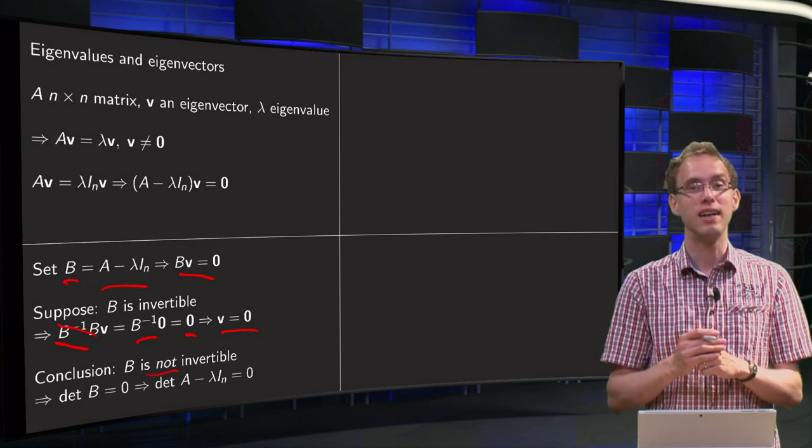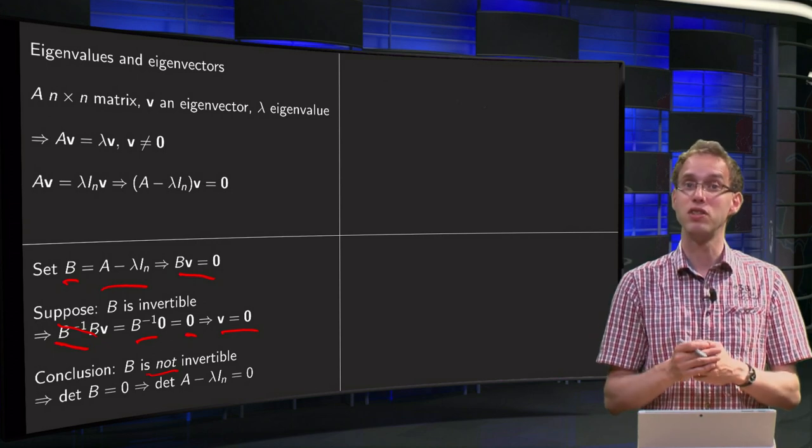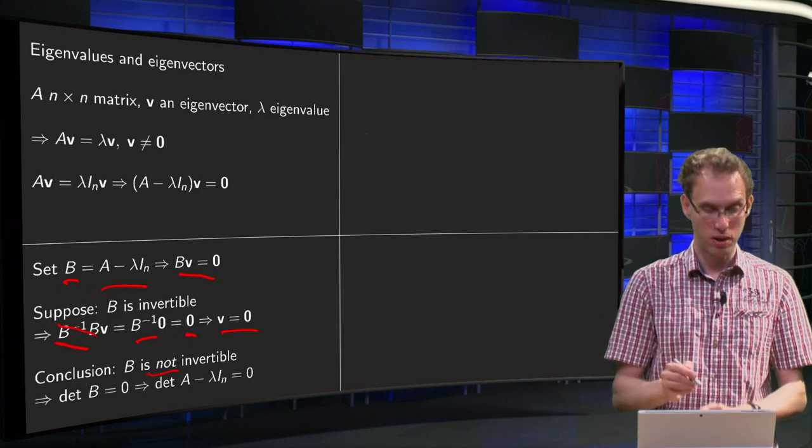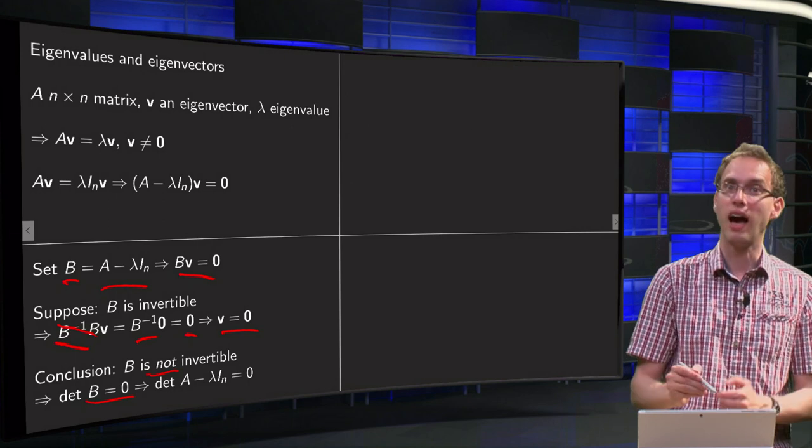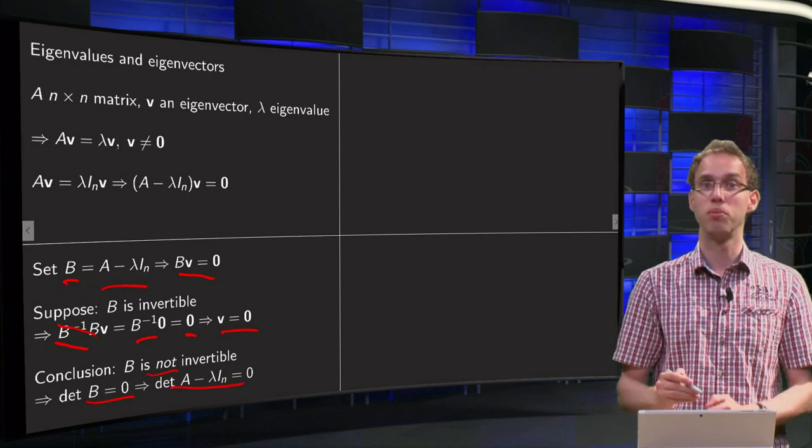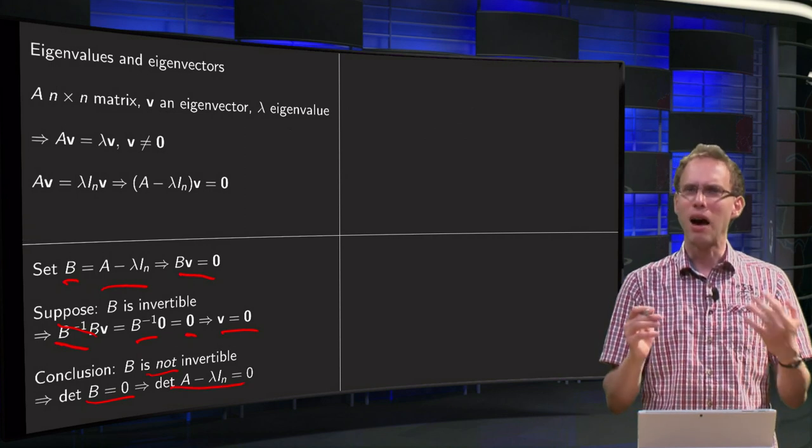But now we have a really nice theorem about that. A matrix is invertible if its determinant is non-zero. Now we conclude that B is not invertible, so that means that the determinant of B has to be zero. And now we insert back what B was, that means that the determinant of the matrix A minus lambda times the identity matrix equals zero.